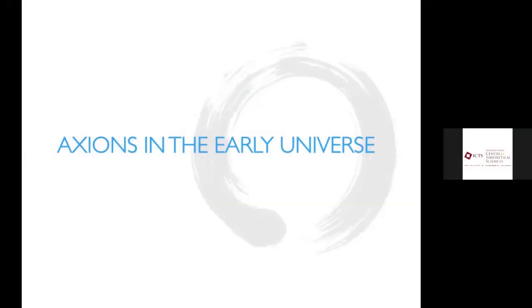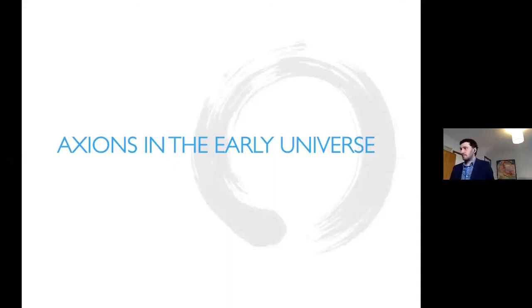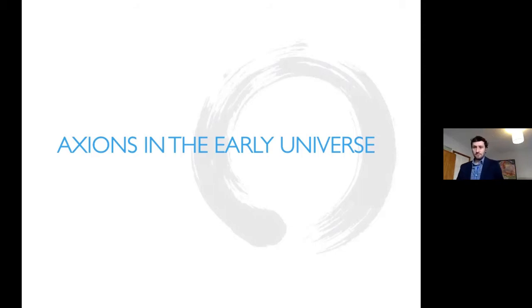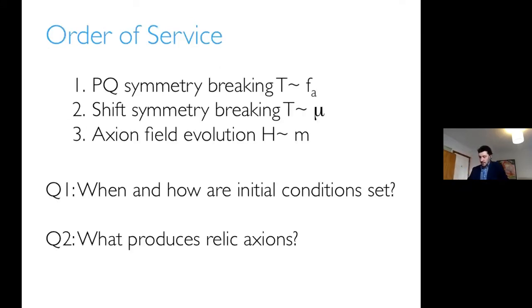We will be talking about axions in the early universe and the axion relic density. I'm going to do about half of the relic density now and then discuss the second half tomorrow morning. The first thing we need to think about is how to get axions in the early universe, which we've already talked about a little earlier.